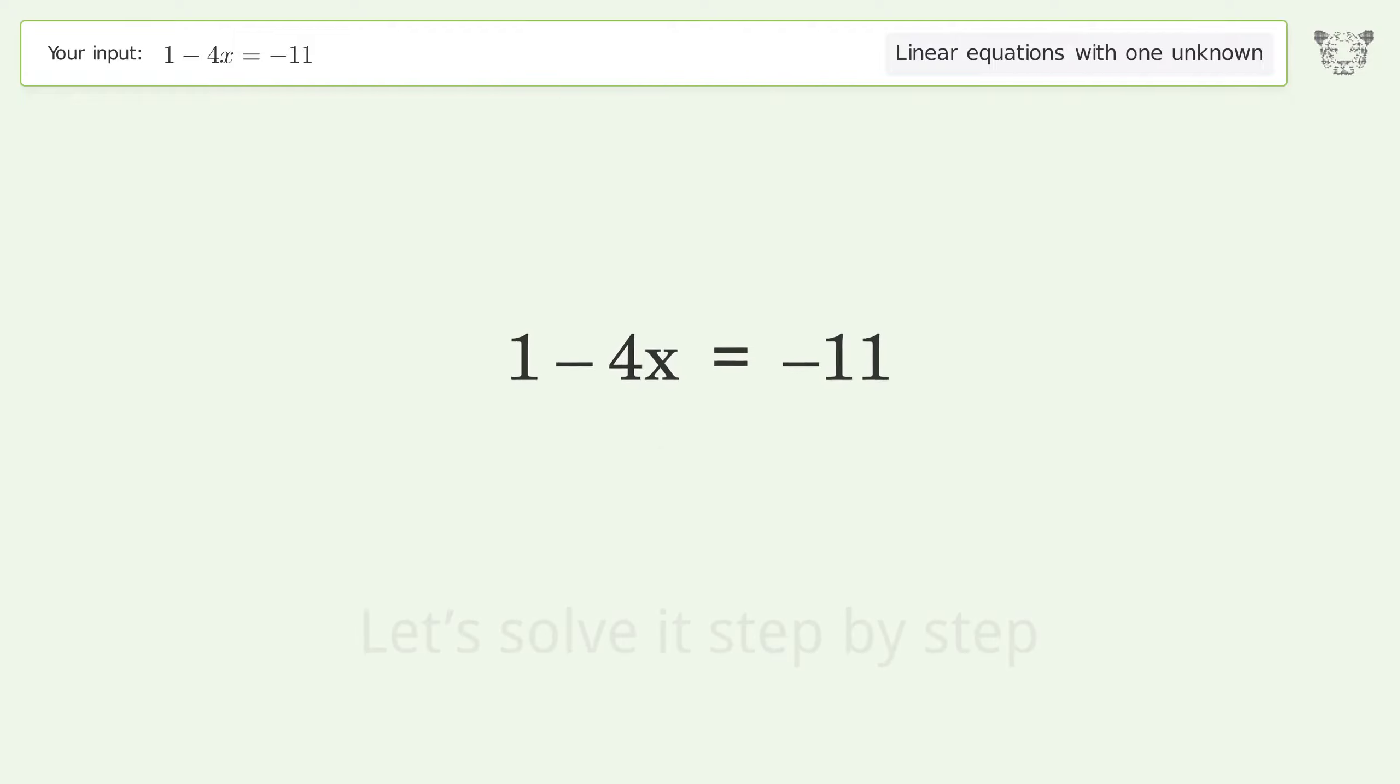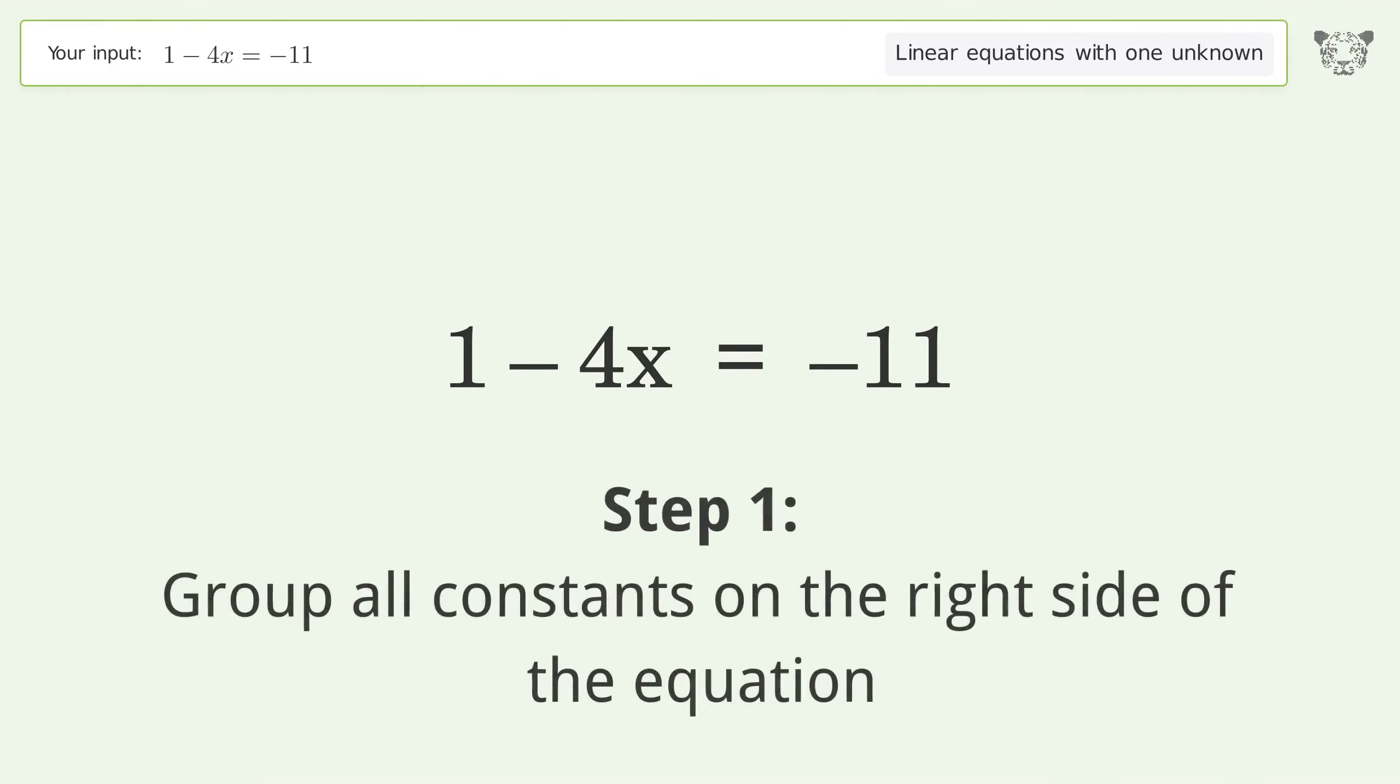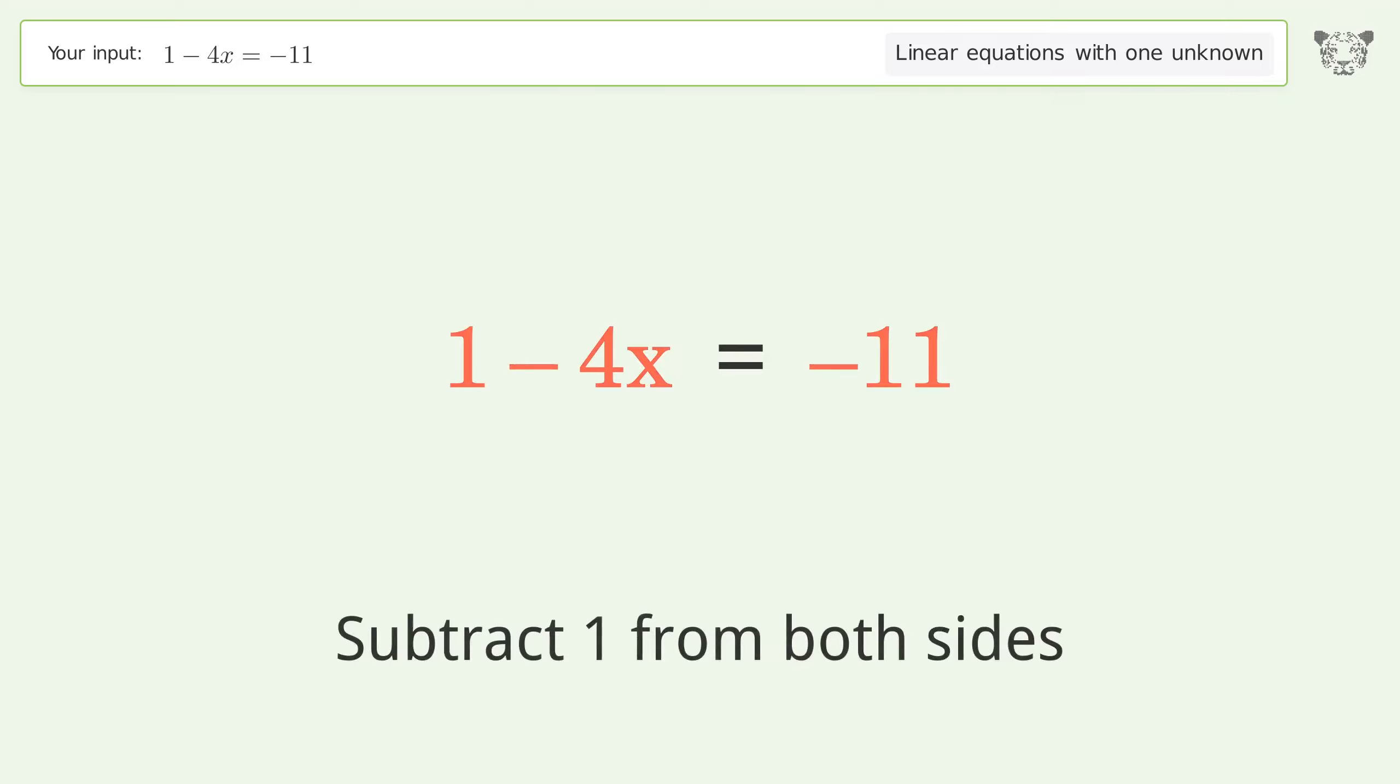Let's solve it step by step. Group all constants on the right side of the equation. Subtract 1 from both sides.